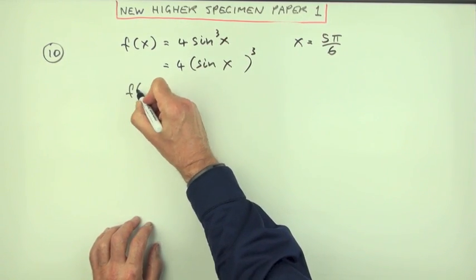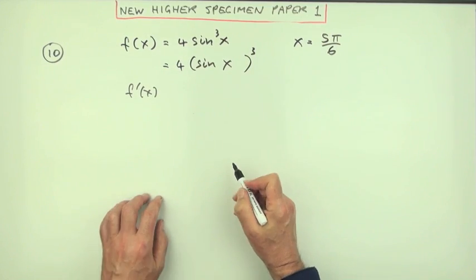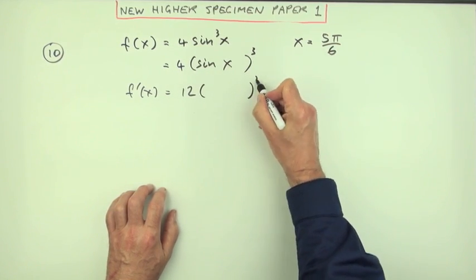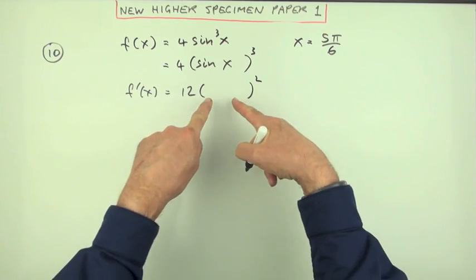So now that I've done that I can differentiate it. You could have done it from there straight away. So that's multiplied by the power, so three fours are 12, take one off the power so it drops to two.